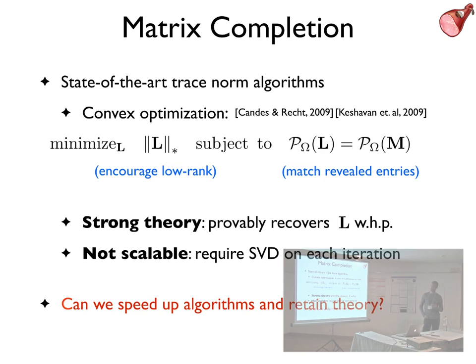They seem to work well in practice as well for small problems, but they don't scale very well. They require a truncated SVD at each iteration, and you really just can't use them for very large problems. So the goal in our work is to come up with a way to speed up these algorithms, keep the nice empirical performance, and also retain the theoretical guarantees.